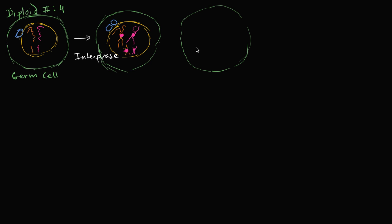In prophase I, a couple of things happen. The nuclear membrane begins to dissolve — this is very similar to prophase when we were looking at mitosis. The nuclear envelope begins to dissolve, and these centrosomes start to maybe migrate a little bit toward different ends. And the DNA starts to bunch up into its condensed form, so now I can start to draw it properly. I'm drawing the homologous chromosomes overlapping on purpose, because something very interesting happens especially in meiosis.